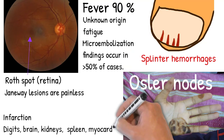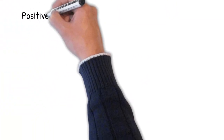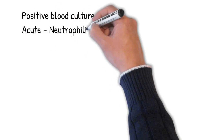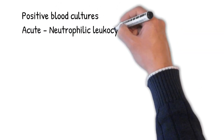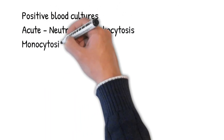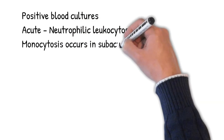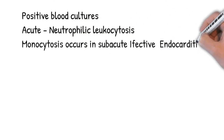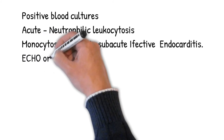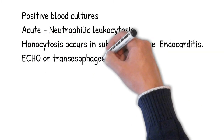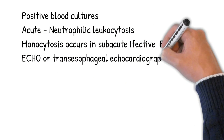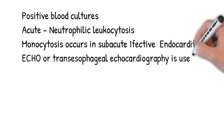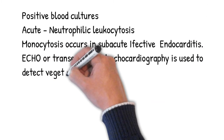Positive blood cultures are present in 80% of cases. Neutrophilic leukocytosis occurs in acute infective endocarditis and monocytosis occurs in subacute infective endocarditis. Three to five sets of blood cultures should be obtained within 60 to 90 minutes, followed by infusion of the appropriate antibiotic regimen. Echocardiography or transesophageal echocardiography is used to detect vegetations on the valves.